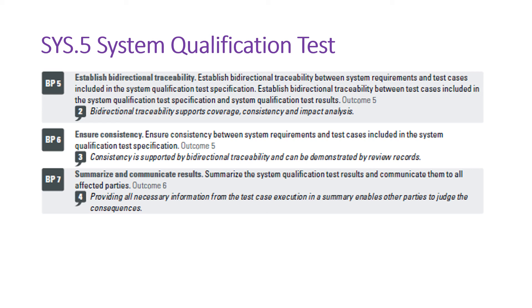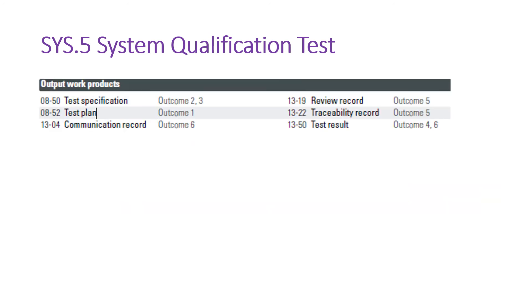BP7 talks about summarizing and communicating results. The qualification test results must be communicated to all affected parties — the client and stakeholders involved in the project. This can be done by sending an email, embedding results in a status report, or verbally communicating. The configuration management tool can also send automated emails whenever a client deliverable folder is updated, ensuring communication records are maintained.